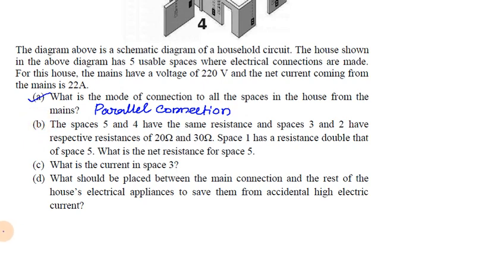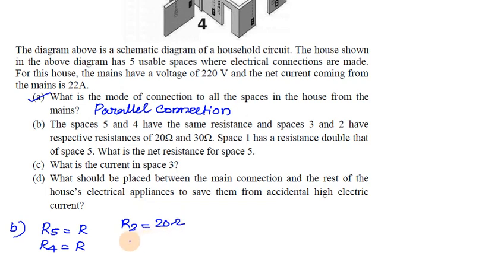For question B: spaces 5 and 4 have respective resistances of 20 ohms and 30 ohms. So space 2 has 20 ohms, space 3 has 30 ohms, and space 1 has a resistance double that of space 5, so space 1 has resistance 2R.